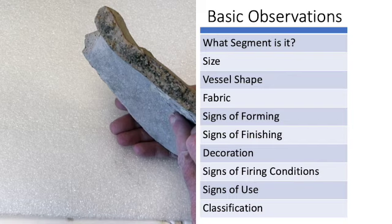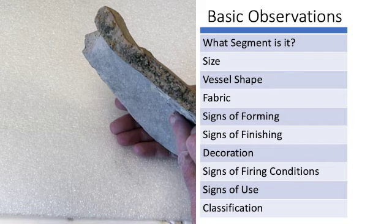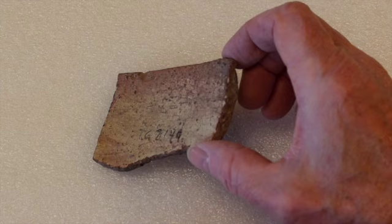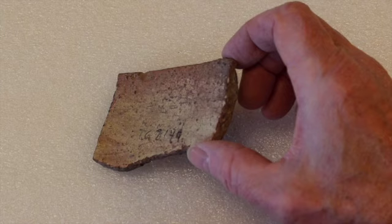When examining pottery, there are a number of questions we can ask, many of which we can answer simply with naked eye observations or under low power magnification. Typically, the first thing to do is to decide what segment a sherd represents.